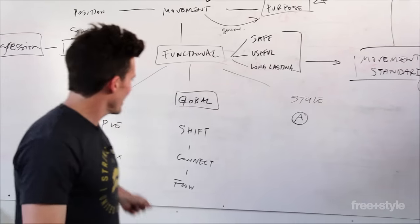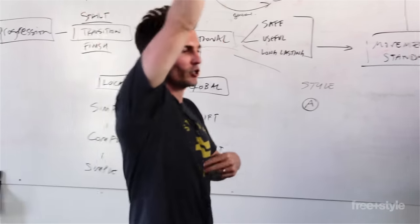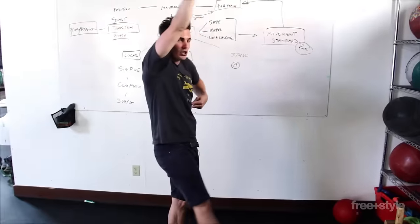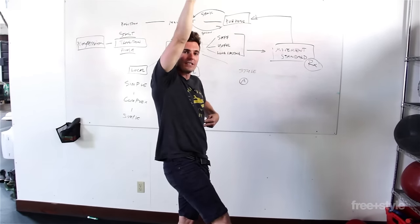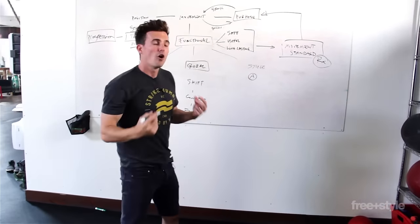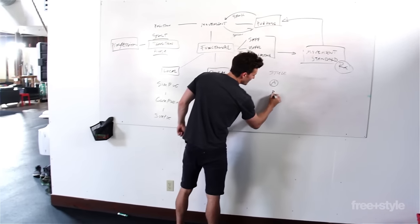Now let's say that globally I add something in. I can add a swing. So I can start kipping. I'm changing global shapes. I'm going from extension to flexion and then I'm using that momentum to pull myself over the bar. That could be style B.